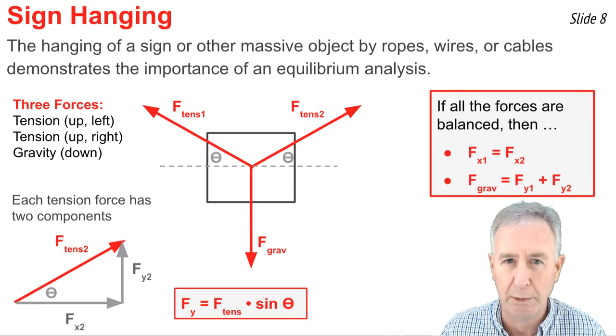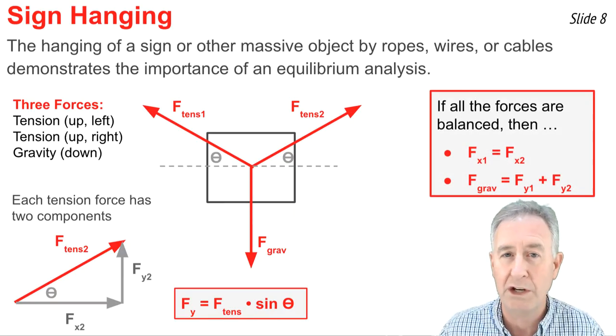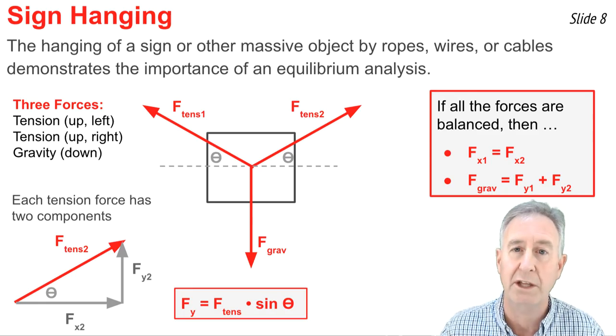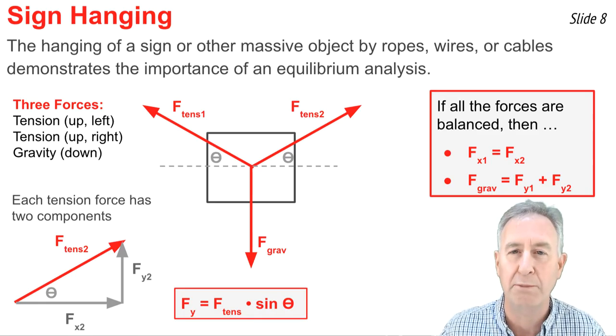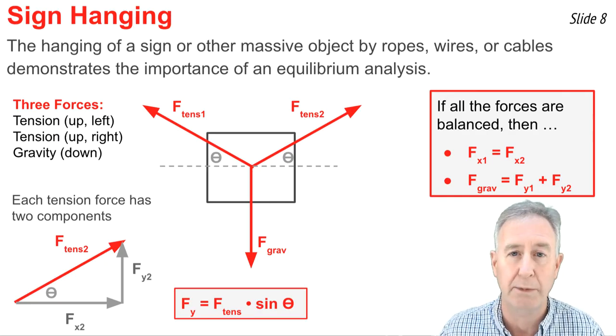Now, since the sign is at equilibrium, I would expect that all the horizontal forces balance, that is, the x component of vector 1, or tension 1, equal the x component of the second tension force. And I would expect all the y forces to balance as well.